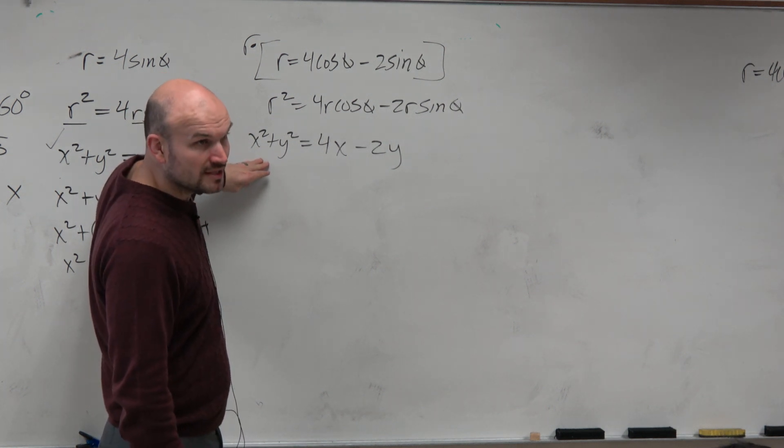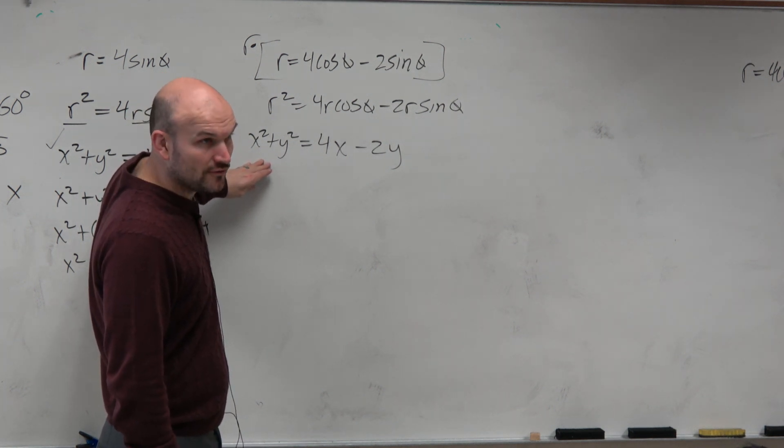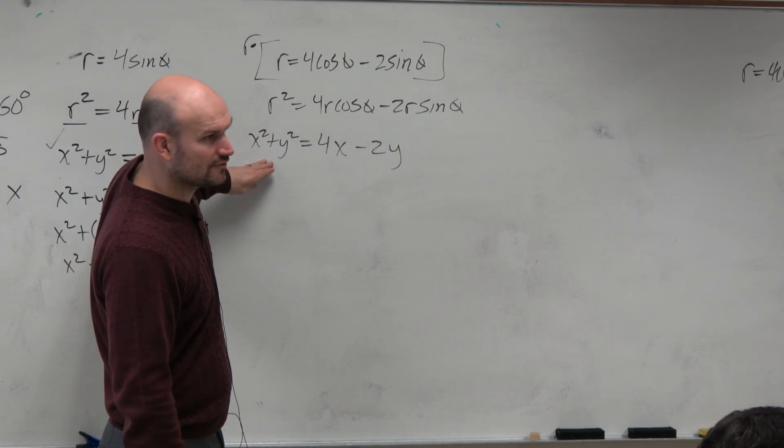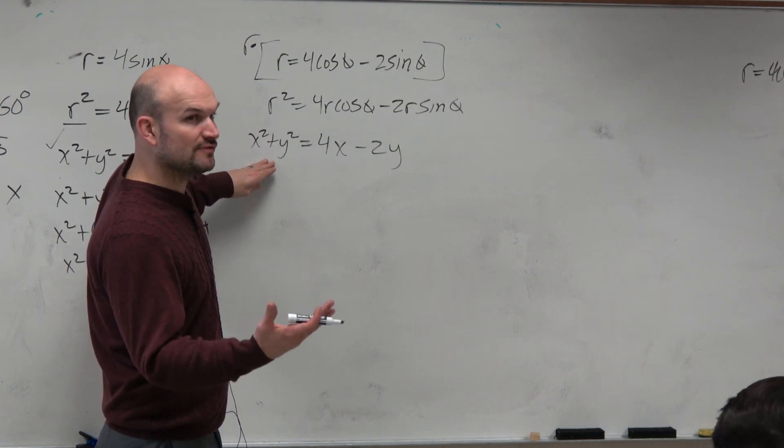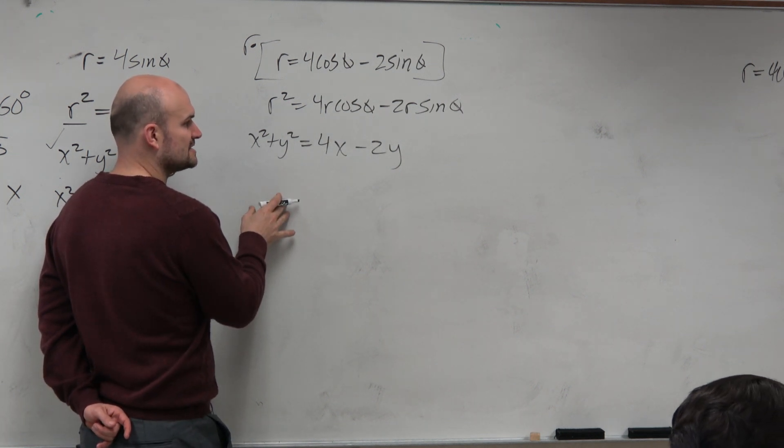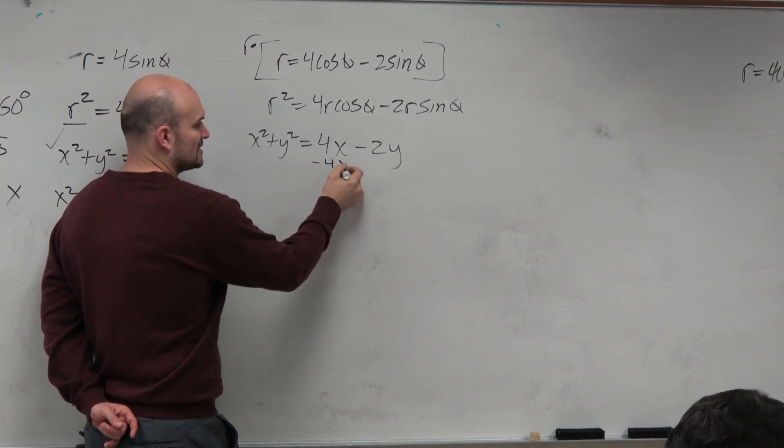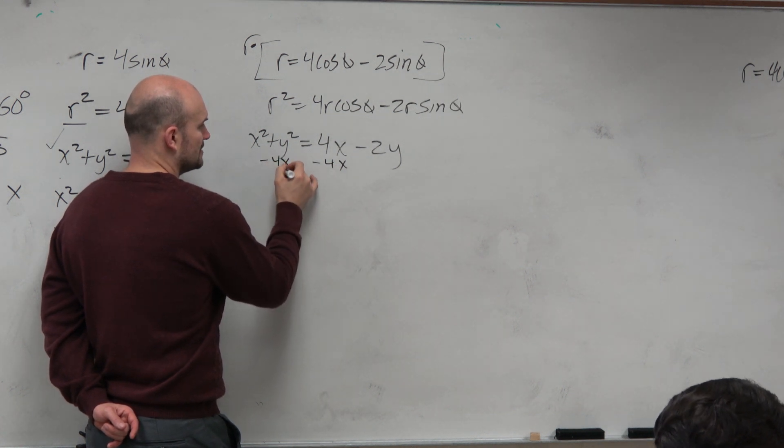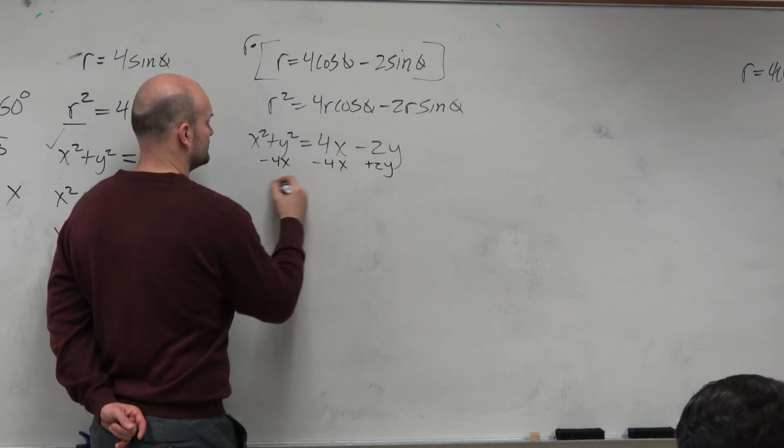this is called our general form. Sometimes we want to put things in standard form. So let me just review this, because it's coming up. When you want to do that, you're going to want to group the x's and group the y's. So you need to subtract the 4x to both sides, and add a 2y to both sides.